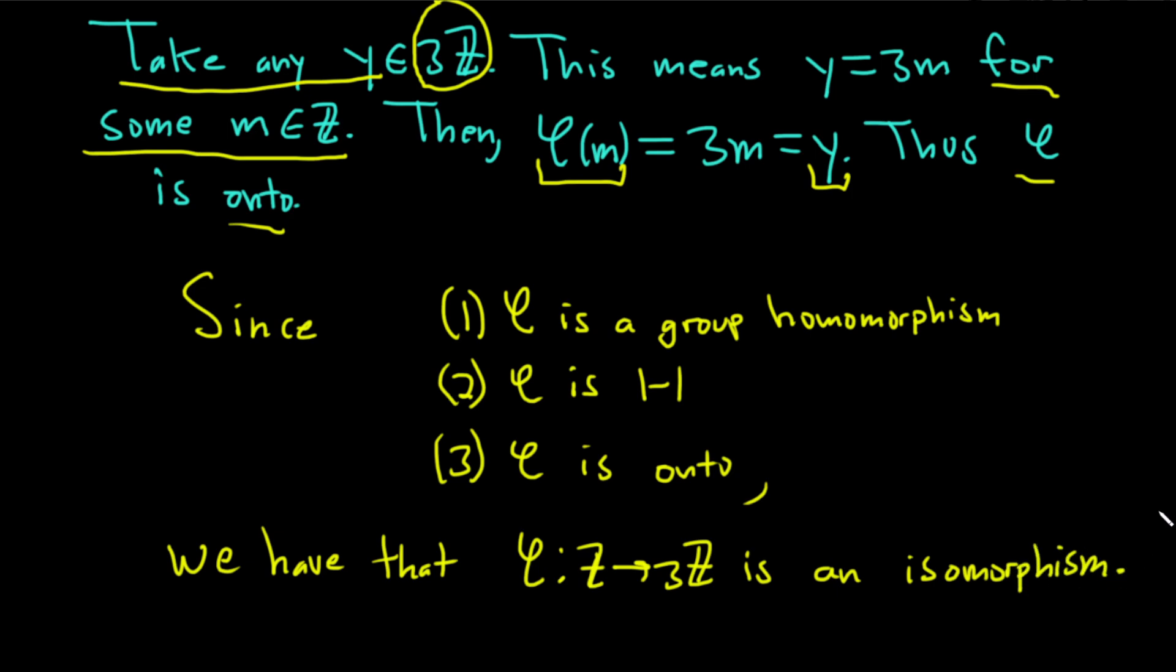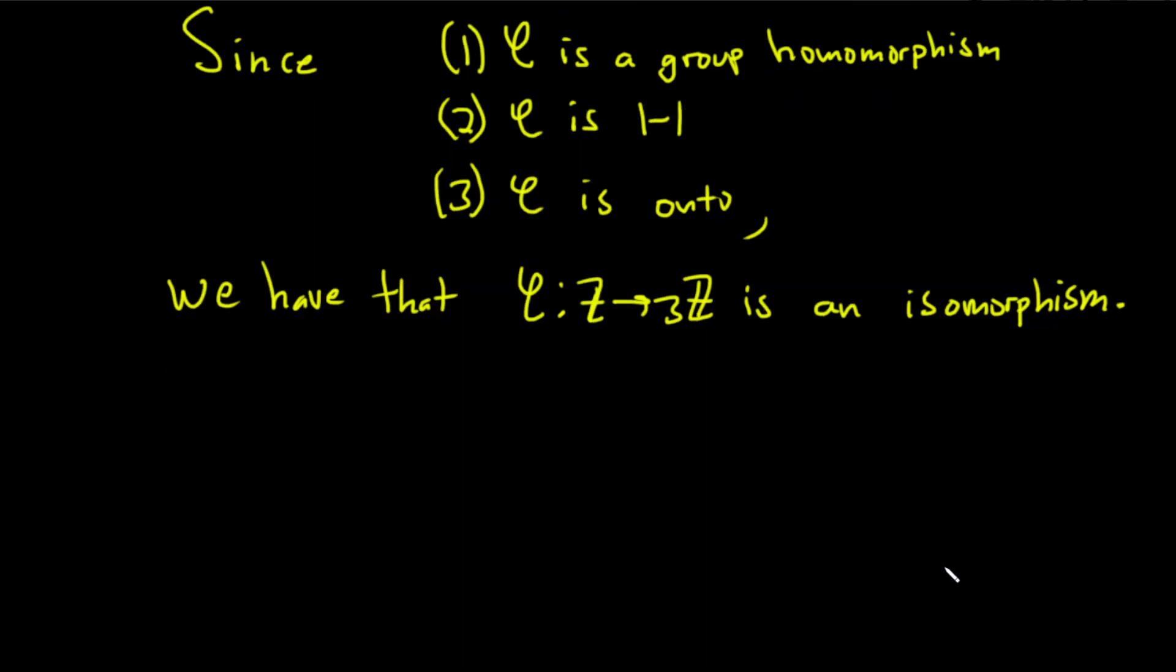That's really powerful. These groups are isomorphic. They're essentially the same in the view of group theory and abstract algebra. They're isomorphic groups. Therefore, we can write Z is isomorphic to 3Z.